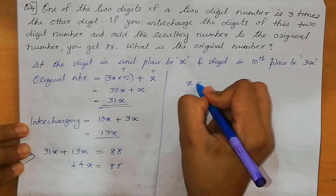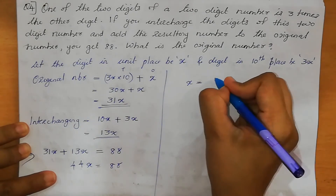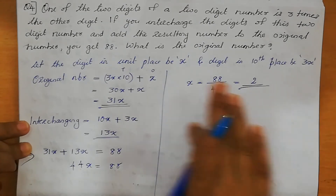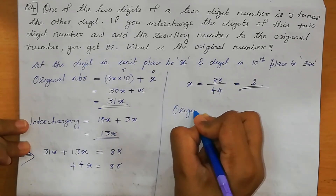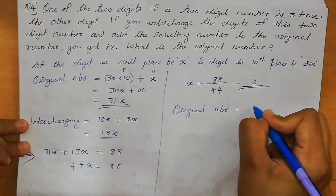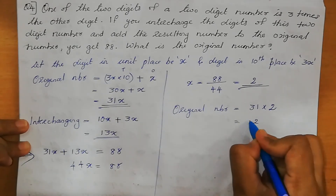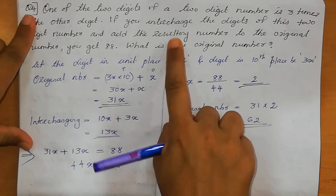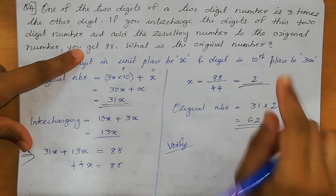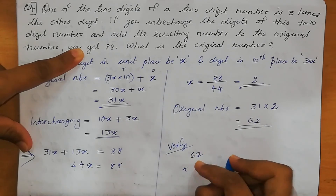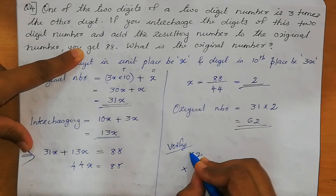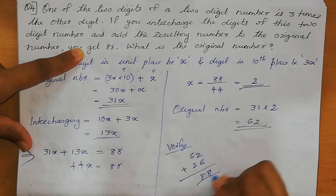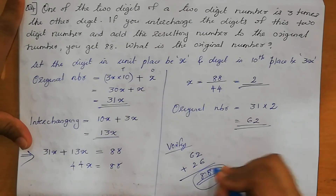Therefore X equal to 88 divided by 44. 44 twos are 88. So X equal to 2. Original number equal to 31X, that means 31 into 2 equals 62. So 62 is the original number. Verify: original number is 62, interchange digits gives 26. Adding: 62 plus 26 equals 88. Our answer is correct.